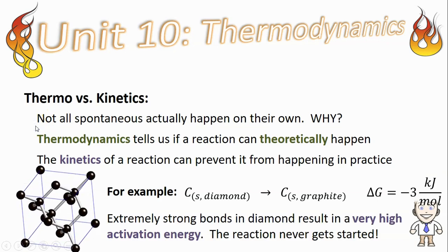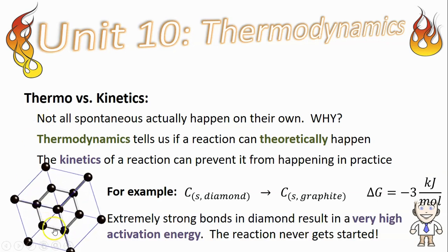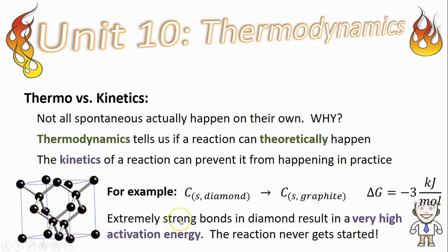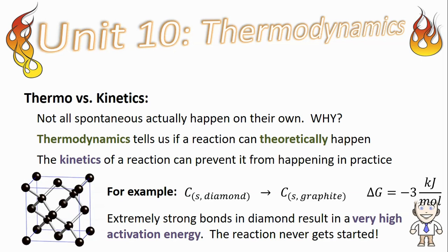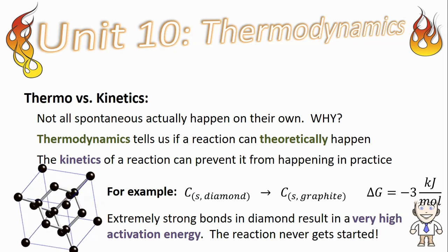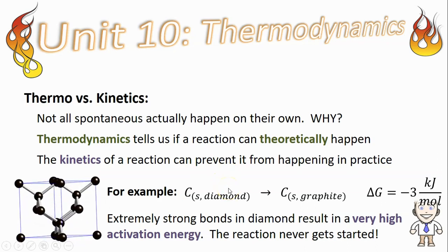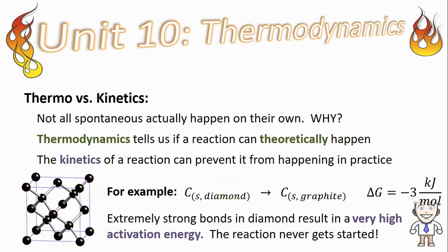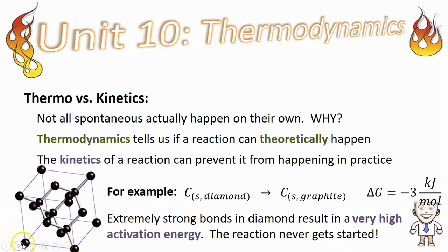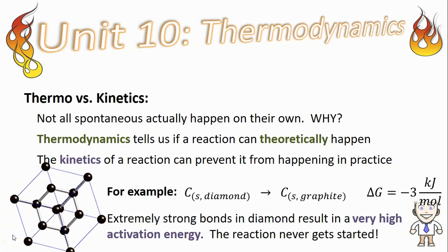You might remember that diamond is a covalent network solid. It's made of carbon atoms all covalently bonded together and those covalent bonds are extremely strong. This means that to actually get the reaction to start requires an incredibly high activation energy. So even though in theory it would be spontaneous, the activation energy is so high that it never actually gets going in the first place.